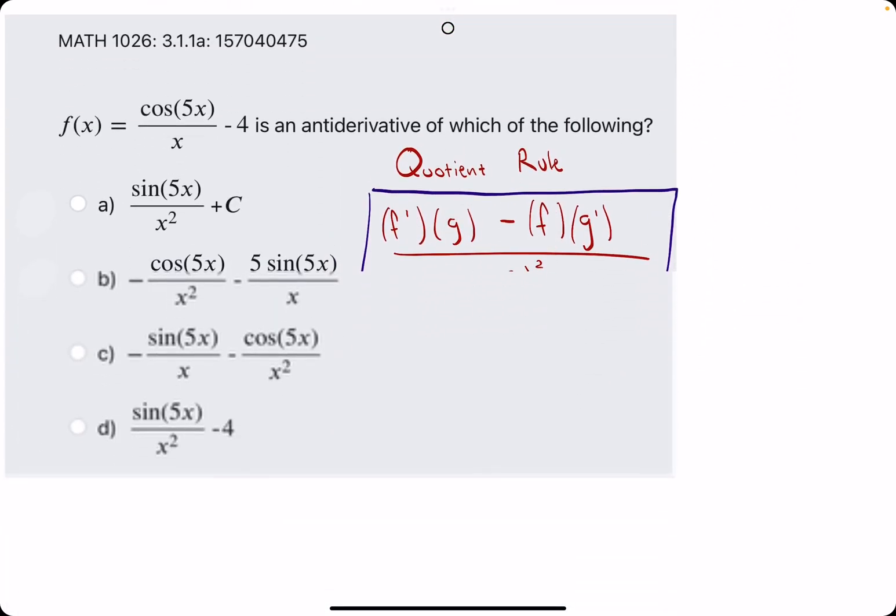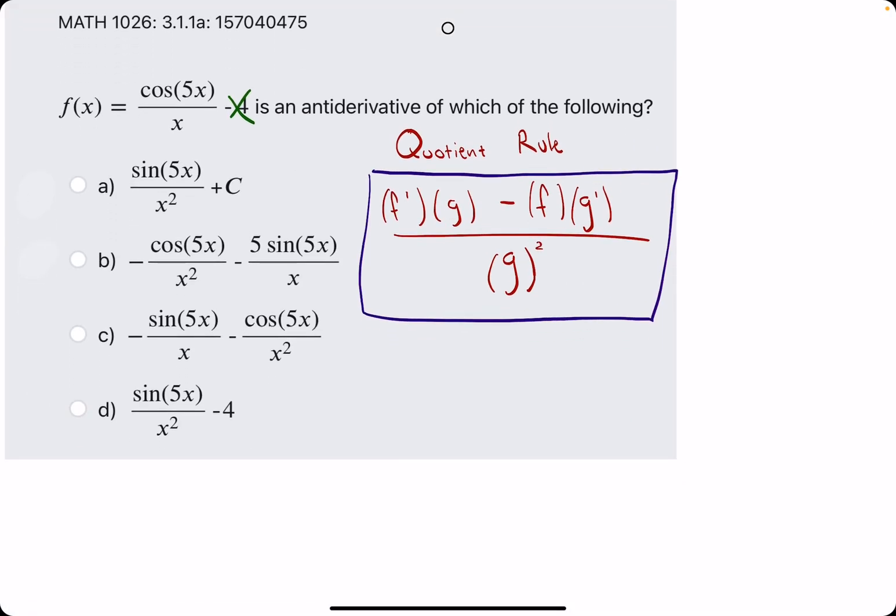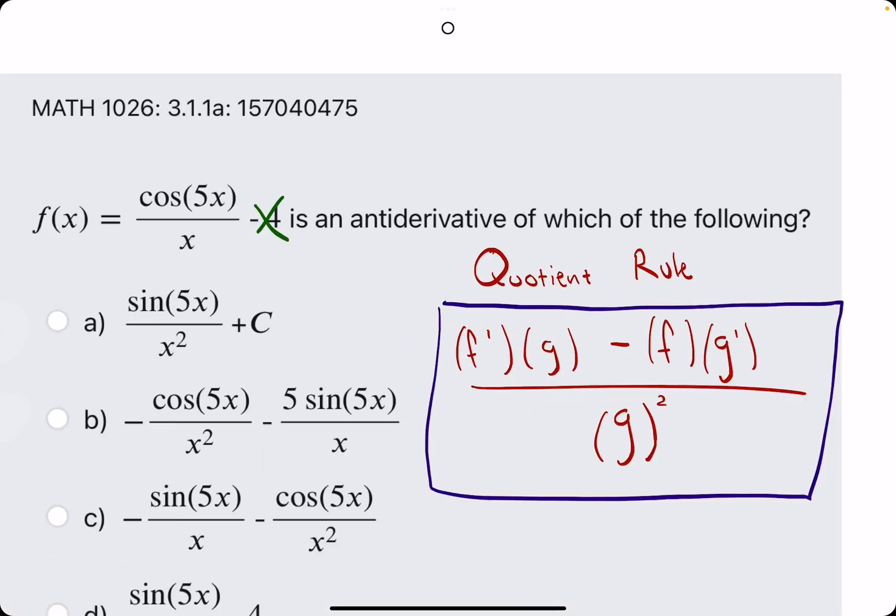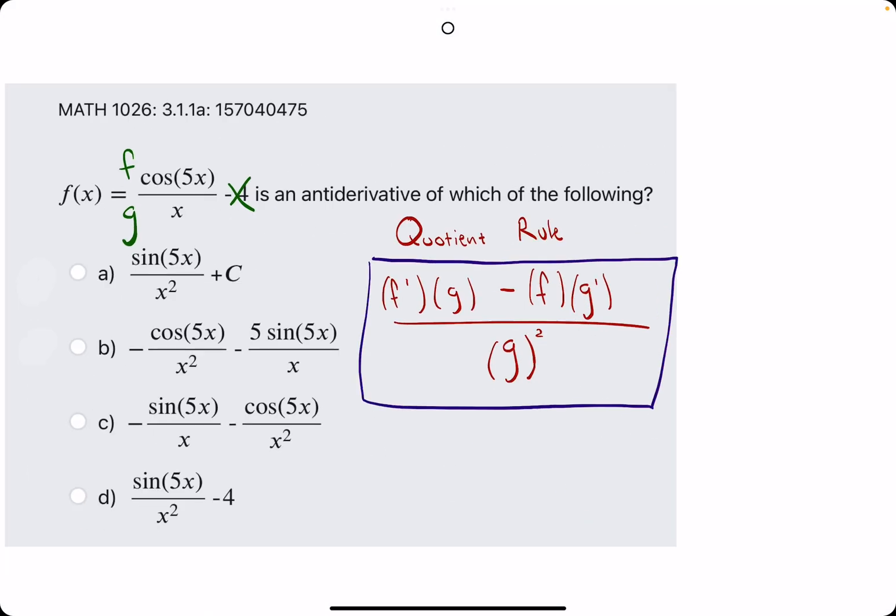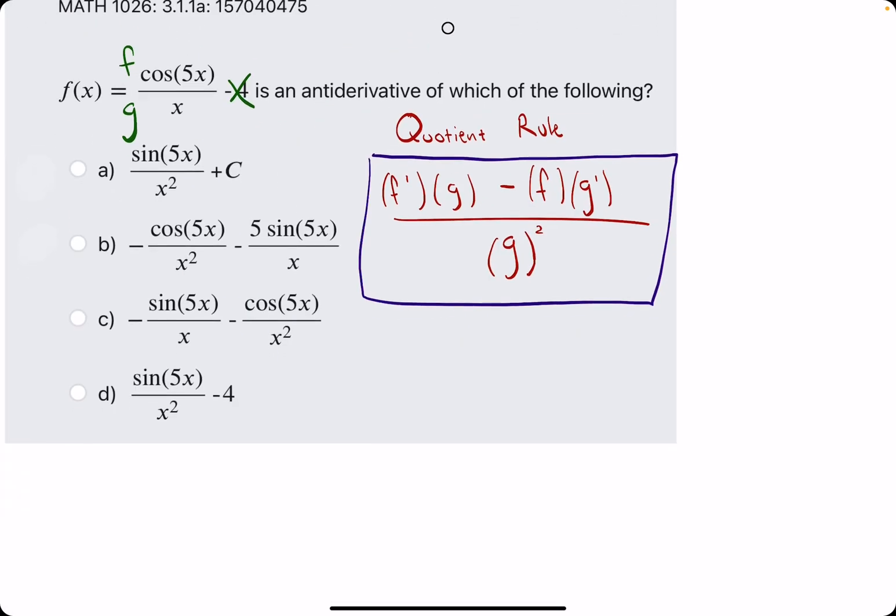All right. Let's do one more quotient rule example. Again, the minus 4, the constant, is always negligible because its derivative is 0. Now, let's jump into the quotient rule without even setting it up. We'll just think about f as the numerator, g as the denominator. Jumping right into plugging in what we know,